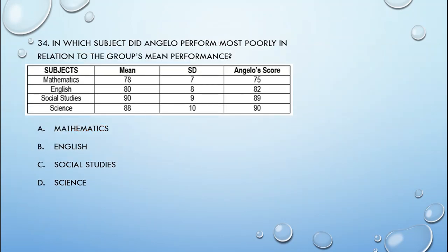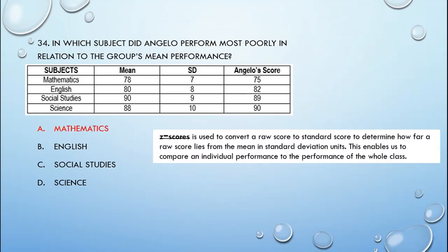Number 34. In which subject did Angelo perform most poorly in relation to the group's mean performance? The answer is mathematics. For this case, we have to use the z-score. Z-score is used to convert a raw score to standard score to determine how far a raw score lies from the mean in standard deviation units. This enables us to compare an individual performance to the performance of the whole class. To compute for the z-score, we have to use the formula score minus the mean divided by standard deviation.